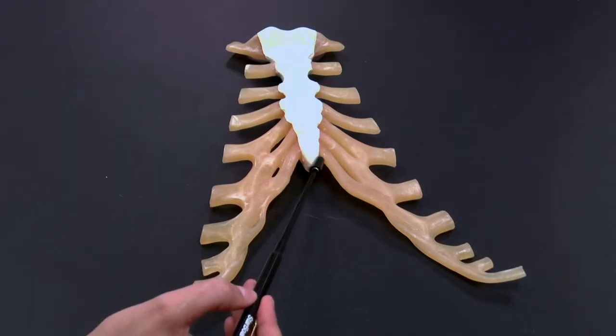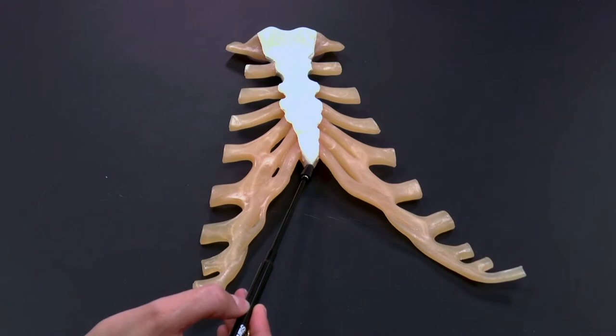And then the part that extends downward, this pointy part here extending inferiorly, this is called the xiphoid process.